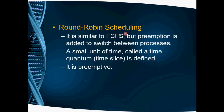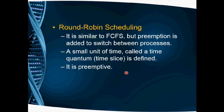The fourth algorithm is round robin scheduling. This is FCFS-based, where processes execute one by one. FCFS is non-preemptive — once a process starts it runs to completion. Preemption is added to FCFS to form round robin. So: FCFS plus preemption equals round robin scheduling. This algorithm is preemptive-oriented.